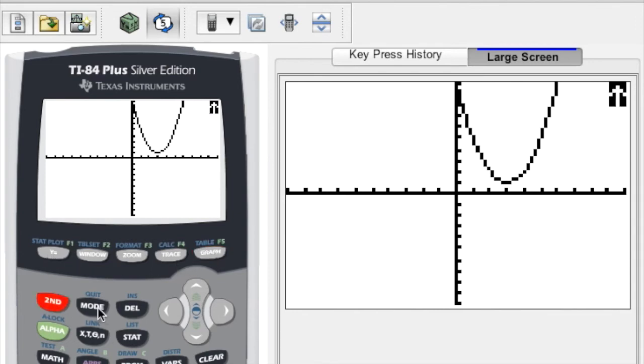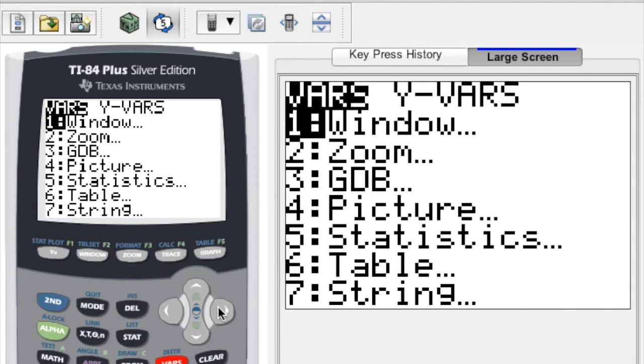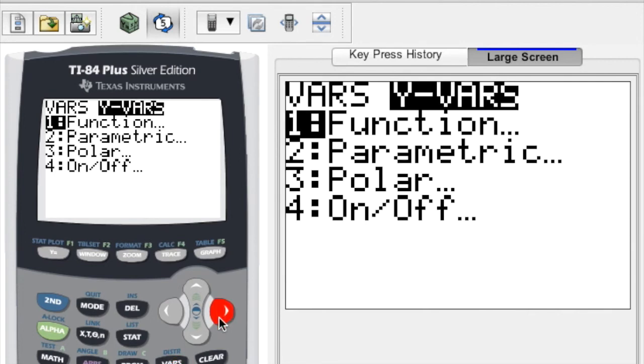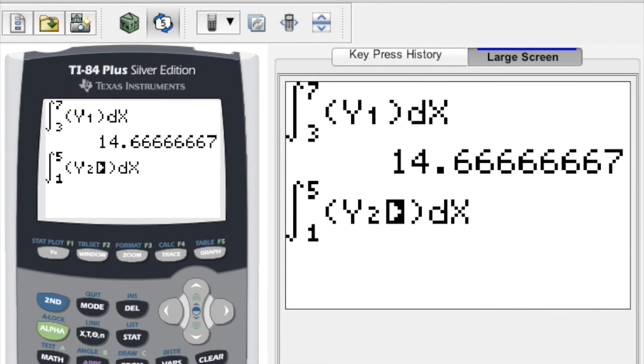And I'm going to press second and entry to put what I just came up with, but I'm going to go back and kind of edit the different pieces here. So this time we're doing the area between 1 and 5, and we're going to delete out the y1 and through the vars key and the yvars menu here and the function menu. We're going to pull in from the calculator's memory y2 instead. And so the exact value for the definite integral from 1 to 5 is going to be 9.3 repeating.